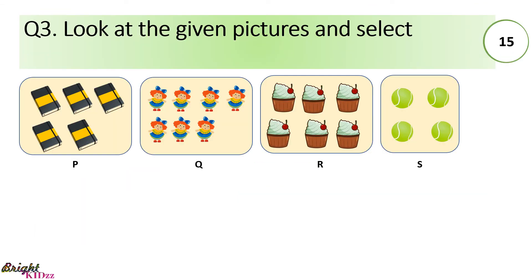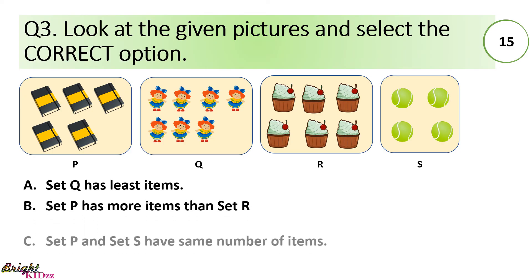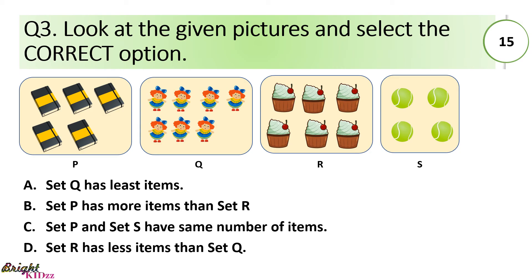Look at the given pictures and select the correct option. Set Q has least items. Set P has more items than set R. Set P and S has same number of items. And set R has less items than set Q.